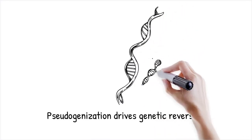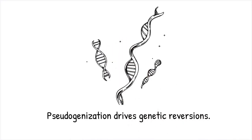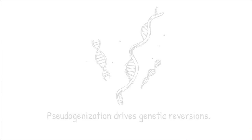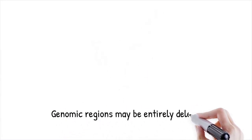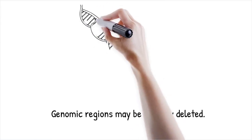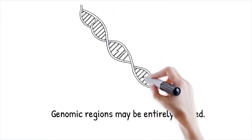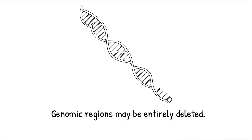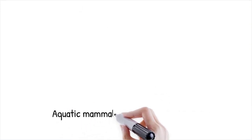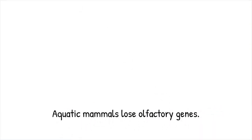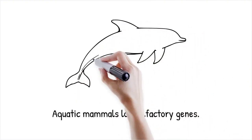Pseudogenization — the process by which formerly functional genes accumulate disabling mutations — drives many reversions. Over generations, these pseudogenes degrade further as selective constraints relax. In some cases, entire genomic regions are deleted, permanently erasing the capacity to rebuild lost structures. These irreversible molecular changes contrast with reversible regulatory shifts, making true ancestral reversion rare. Olfactory receptor genes in aquatic mammals have become pseudogenes due to relaxed selection on smell in underwater environments — like tearing pages out of a manual so that certain instructions can never be followed again.